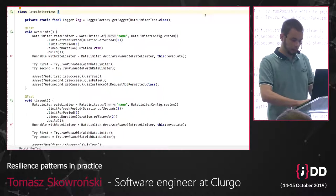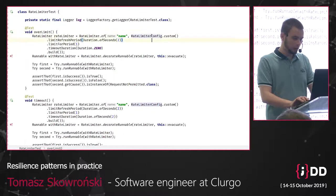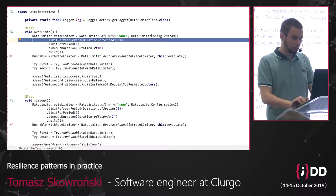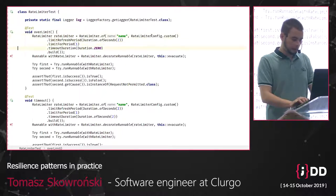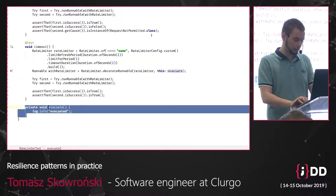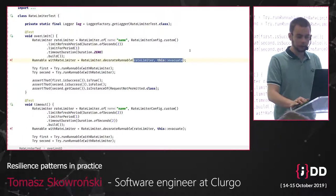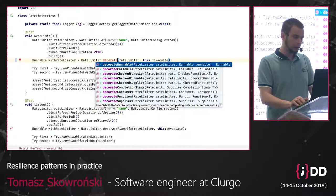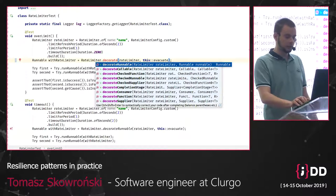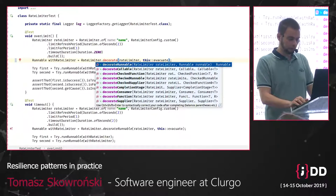Let's see it in practice. We begin with configuration: our time window has two seconds and we allow one execution per time window. We then decorate our business logic with the created Rate Limiter. What's interesting is that with Resilience4j you can decorate almost everything, because it promotes functional interfaces like Runnable, Callable, Function, Supplier, or even Future. You don't need to implement these interfaces — you can provide a method reference or even a lambda. In this case it is a Runnable implementation.